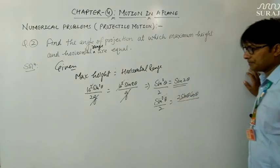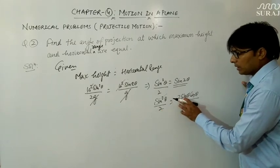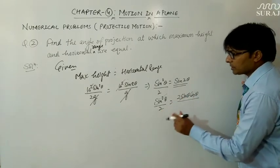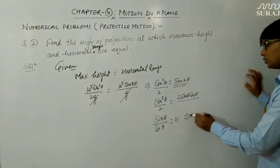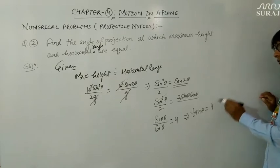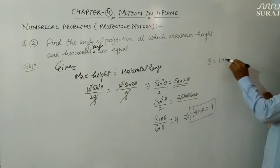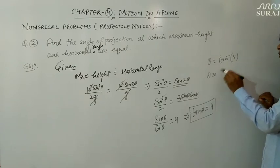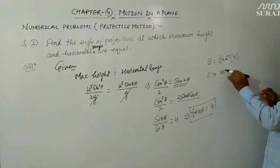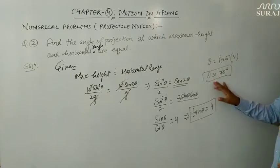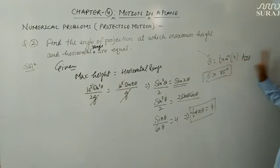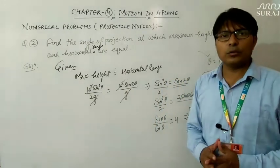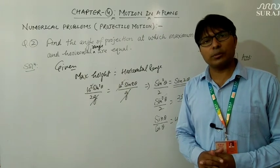So tanθ = 4, which gives θ = tan⁻¹(4), approximately 75°. You need not remember this value — you can write your answer as tan⁻¹(4). This is how we solve this question; it is quite a simple question. In our next video we will discuss some more numerical problems. Thank you very much for watching this video.